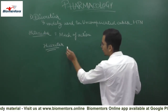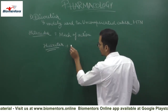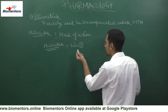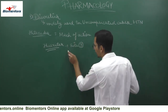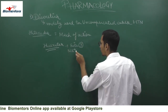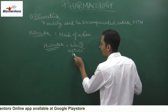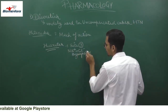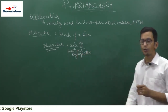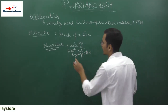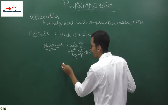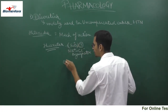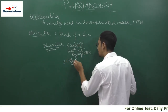Now talking about the mechanism of action of thiazides. These drugs act on site 3, which is the early distal convoluted tubule (early DCT). At this site, a sodium and chloride symporter is present, and thiazides affect the function of this sodium and chloride symporter.